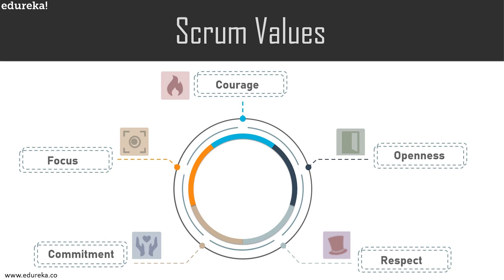Courage means Scrum team members have the courage to do the right thing and work on tough problems, supporting each other in taking informed risks. Respect means that as self-organizing teams, Scrum teams cultivate an engaged, productive, and humane environment — the framework includes elements like sprint planning, sprint review, and retrospective to promote respect for each role and diverse perspectives. Openness — essentially transparency — means every team member knows what the team is working on and what their contribution is toward the goal.